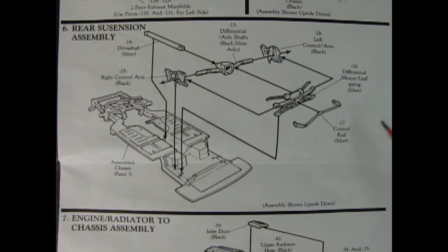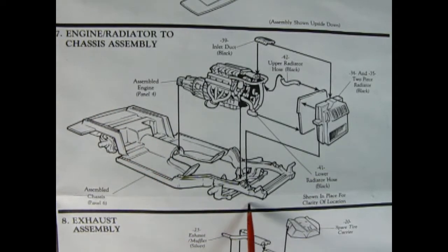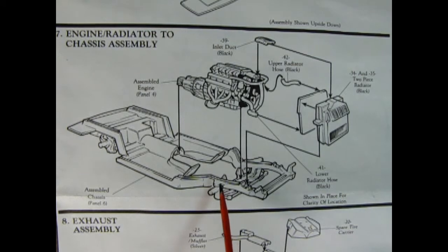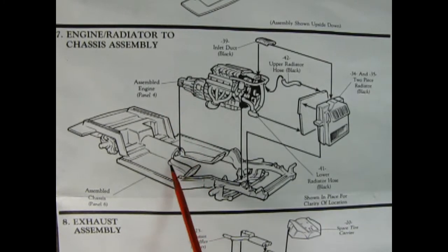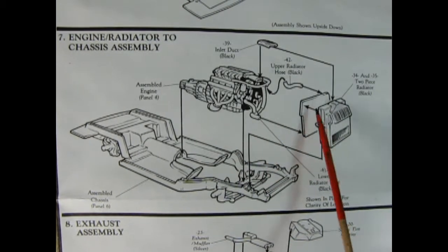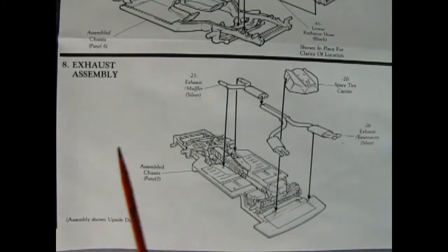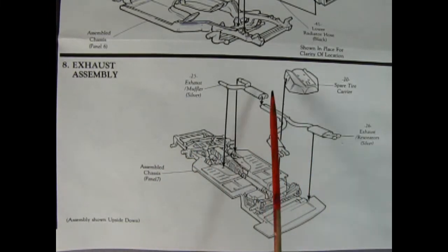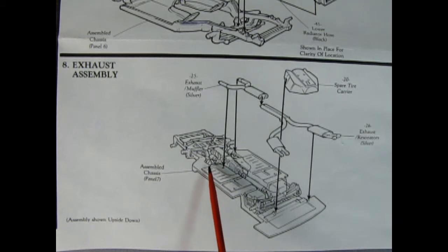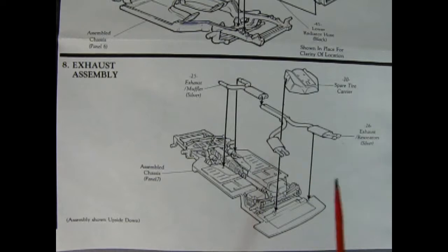Panel 7 shows our engine radiator to chassis assembly. Here we've got our assembled chassis with our suspension components as in panels 5 and 6. Now we're gonna drop that wonderful motor right down here hooking up the rear of the transmission onto our drive shaft. And then we're gonna hook our radiator hose up onto our two-piece radiator. You get the upper radiator hose and the inlet duct. Panel 8 shows our exhaust assembly and it's just two pieces which is nice. That will drop onto the exhaust manifold sticking out there and then this will glue into the back and up over the springs. Then we have our spare tire carrier which will drop down here.